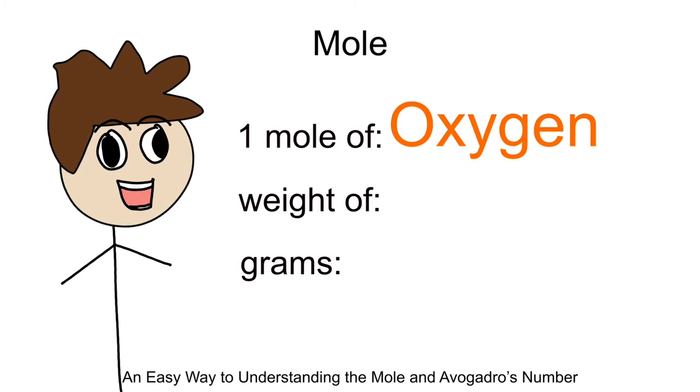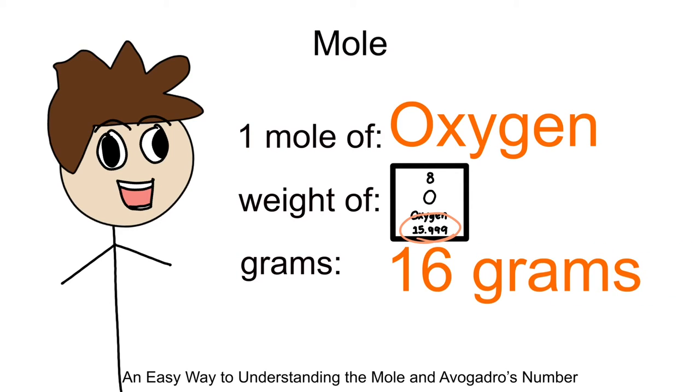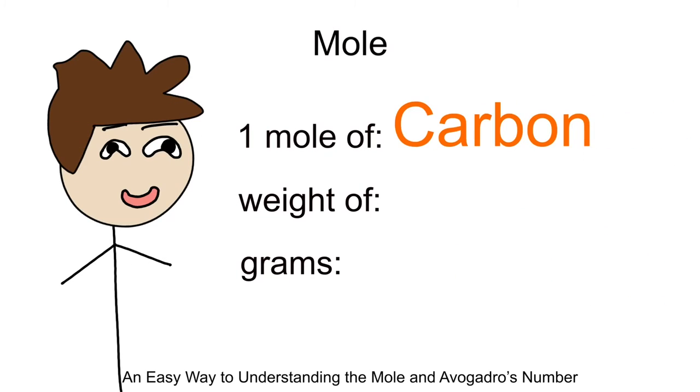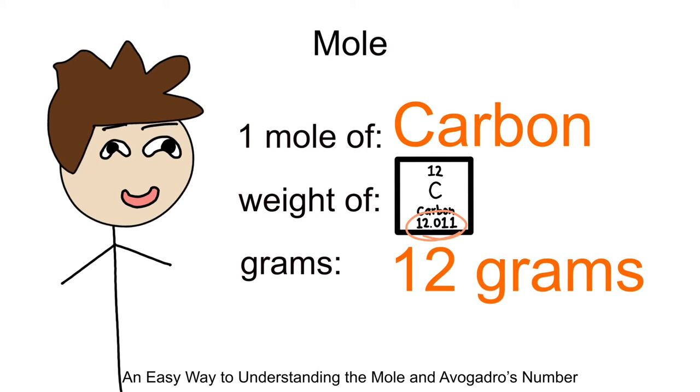Another example. Oxygen has an atomic weight of 16. Using what we know, we could infer that one mole of oxygen has 16 grams in it. Pretty simple, right? Don't get it yet? One more. The atomic weight of carbon is 12, meaning that one mole of carbon has 12 grams of carbon in it. Fantastic. I'm proud of you guys.